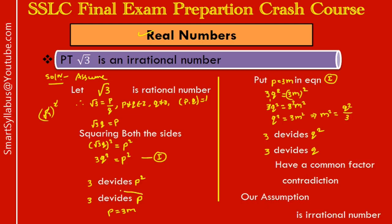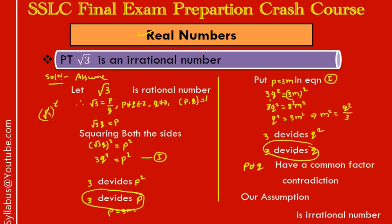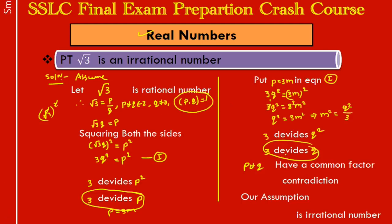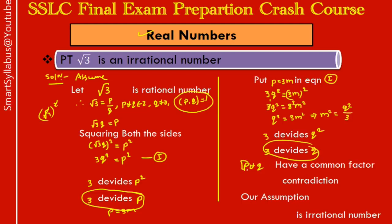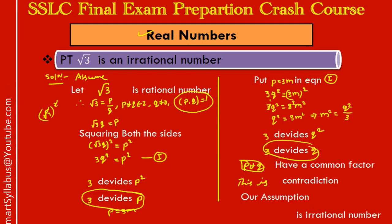Now, 3 divides p and 3 divides q — meaning p and q are both divisible by 3. So p and q have a common factor of 3. But earlier we assumed p and q are co-primes, meaning their only common factor is 1. Now we're finding their common factor is 3. For the same numbers p and q, we have two different common factors — 1 and 3 — which is a contradiction.